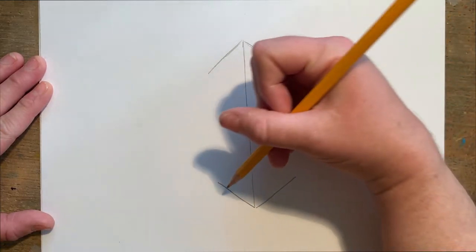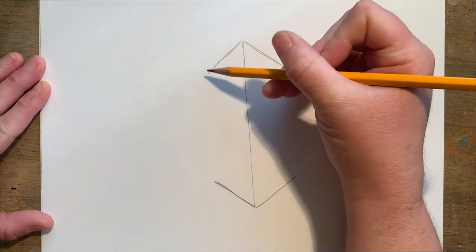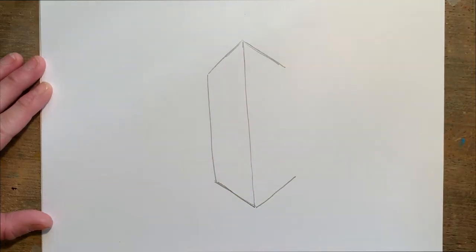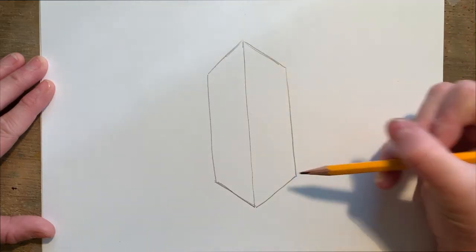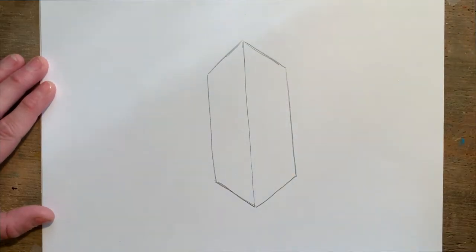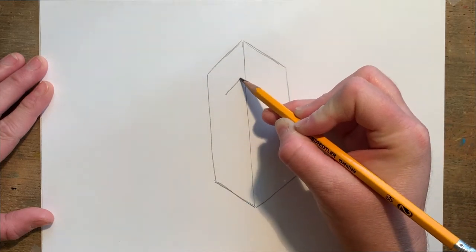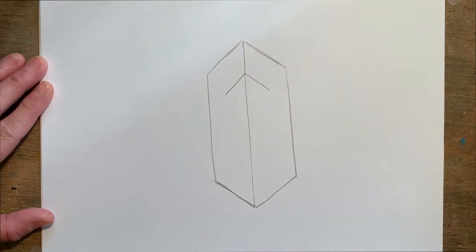We're now going to connect these two lines together from the top to the bottom, and we're going to do the same thing on the other side. Now inside of the shape we're going to echo the same arrow shape by doing a smaller one inside, making sure it crosses through the center line.